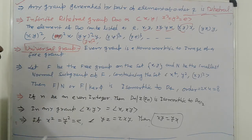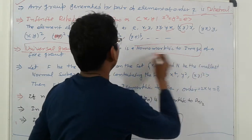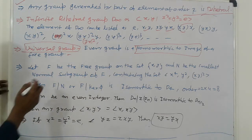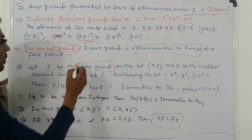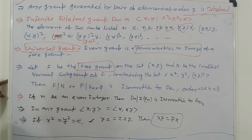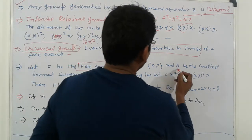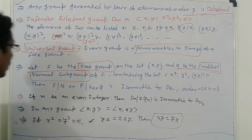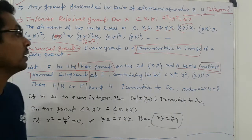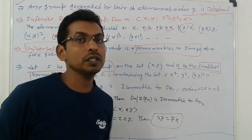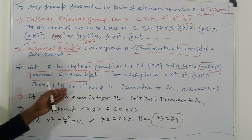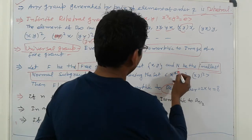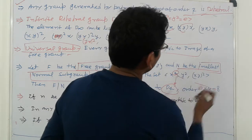What is the universal group? Every group is a homomorphic image of a free group — that is called the universal group. About free groups: the free group on the set {x, y} with the smallest normal subgroup of F containing the set of elements {x^4, y^2, xy^2}, then F/N is isomorphic to D4, and the order is 2n.